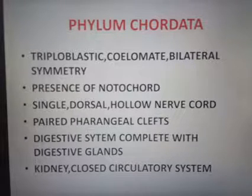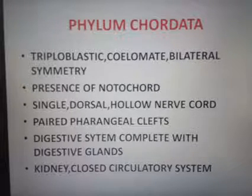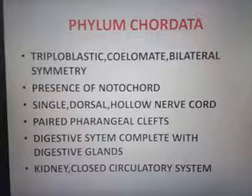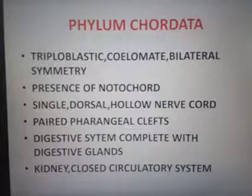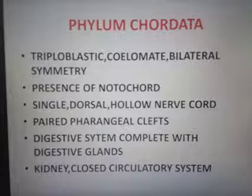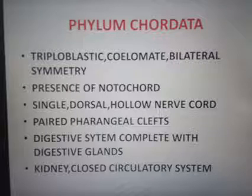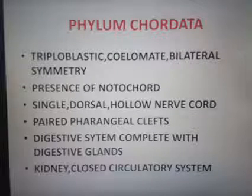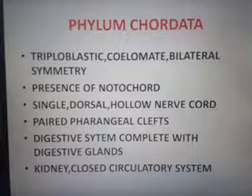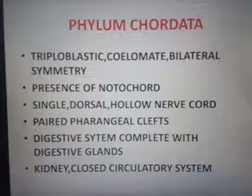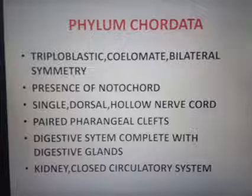Then closed circulatory system with a ventral heart. The ventral portion is where the mouth is seen. Our heart is seen on the ventral side. The blood contains RBC. Sexes are separate with rare exceptions. Again repeating the main features of Phylum Chordata: the dorsal nerve cord, the presence of pharyngeal clefts, and the dorsal tubular nerve cord.